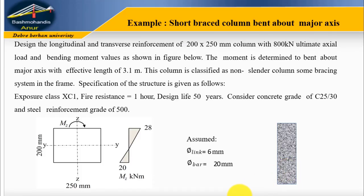Let me read the question. Design the longitudinal and transverse reinforcement of 200 by 250 mm column with 800 kN ultimate axial load and bending moment values as shown in figure below. The moment is determined to bend about major axis with effective length of 3.1 meter. This column is classified as non-slender column or short column. On the other hand, some bracing system in the frame. Specification of the structure is given as follows: